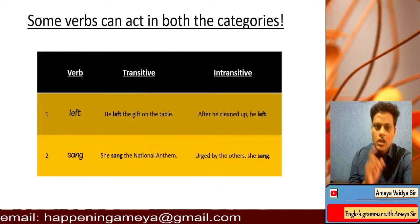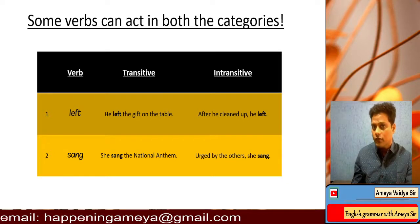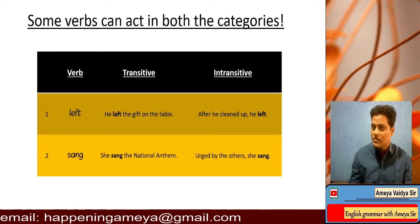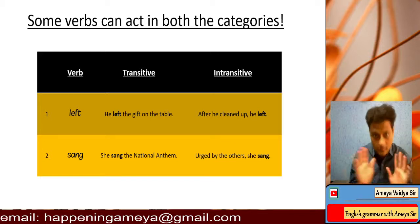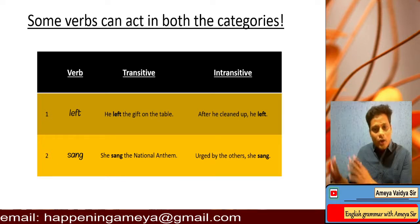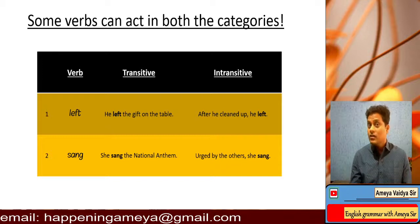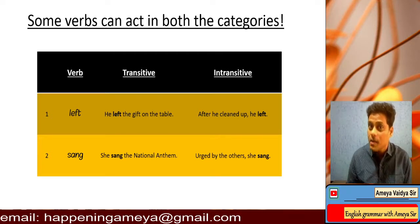The first verb we will talk about is 'left.' The transitive use: 'He left the gift on the table.' He left what? The gift on the table — that makes sense. But how can 'left' be used intransitively? 'After he cleaned up, he left.' You don't want to ask 'he left what?' — he took himself. That's intransitive. Second example: 'sang.' Transitive: 'She sang the national anthem' — sang what? The national anthem. Intransitive: 'Urged by the others, she sang' — no object needed.